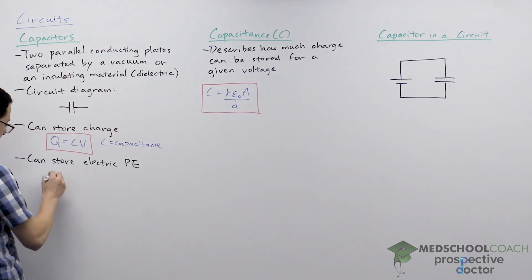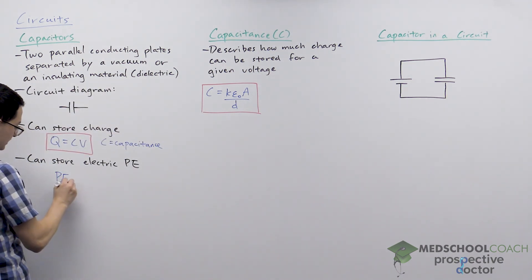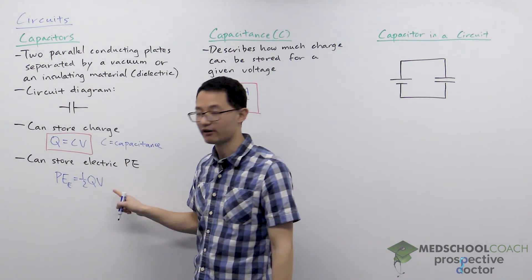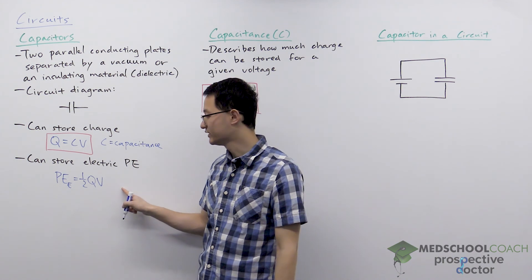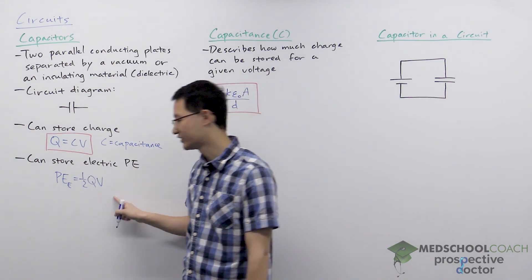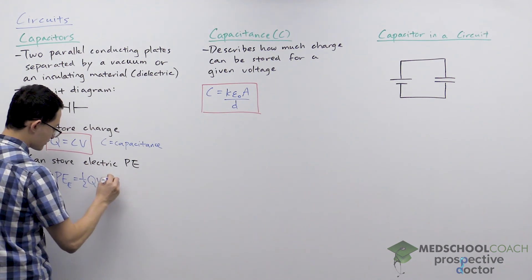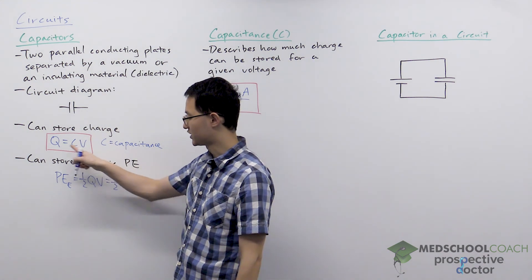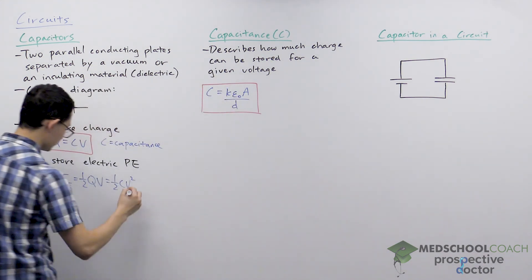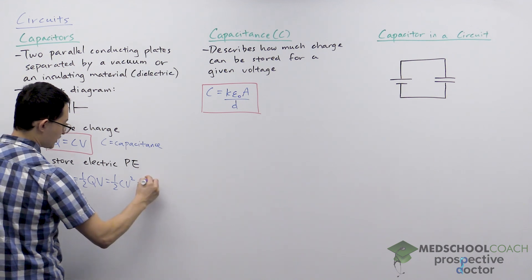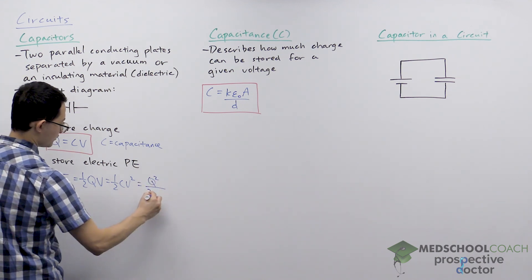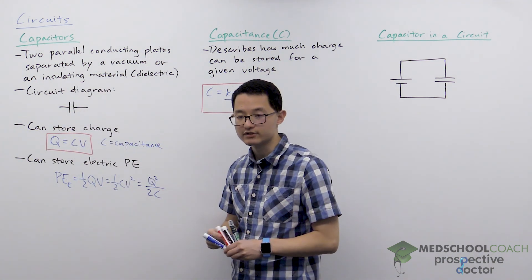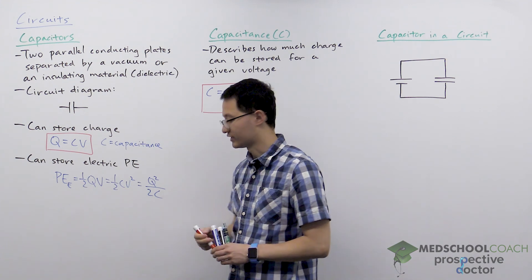The potential energy stored on a capacitor is equal to one half Q V. There are other variants of this equation: using Q equals C V, the potential energy is also one half C V squared. Or if you rearrange for voltage — voltage equals Q over C — then potential energy is Q squared over 2C. Any of these three equations can be used to calculate the potential energy stored on a capacitor.